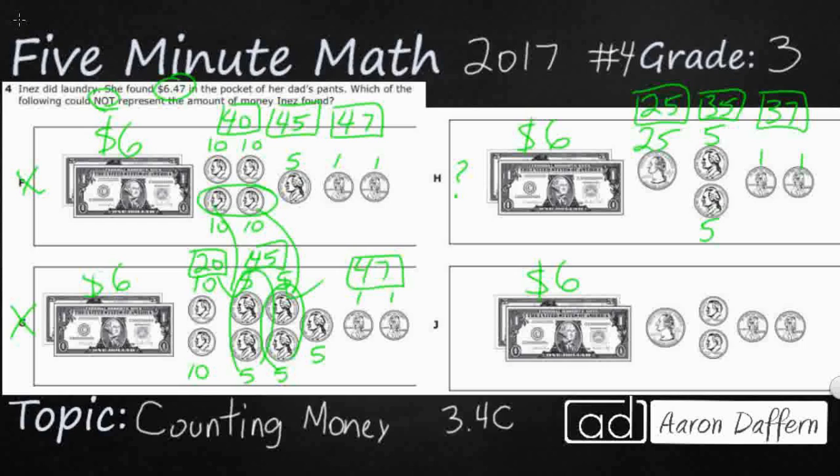Let's double-check number J. So it's another quarter. And so we've got two dimes and two pennies. So that's 25, 35, 45, 46, 47. Yes, so J is going to work, and H is going to be our answer because that is one that does not equal $6.47.